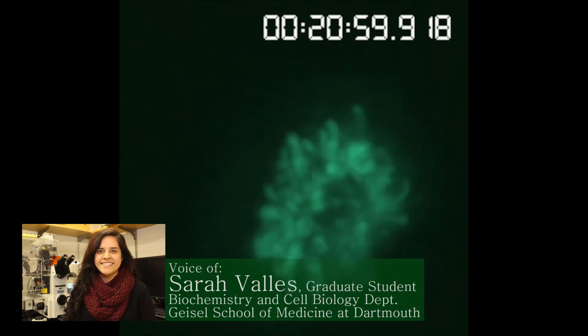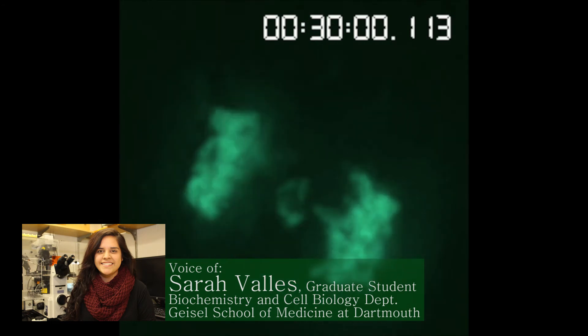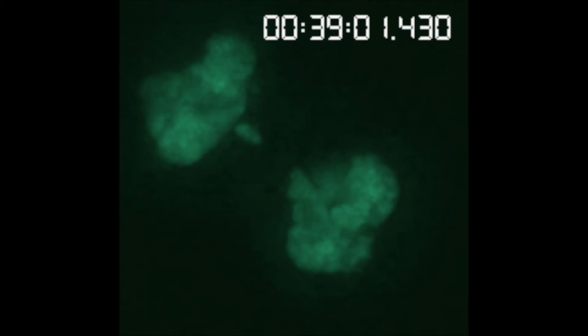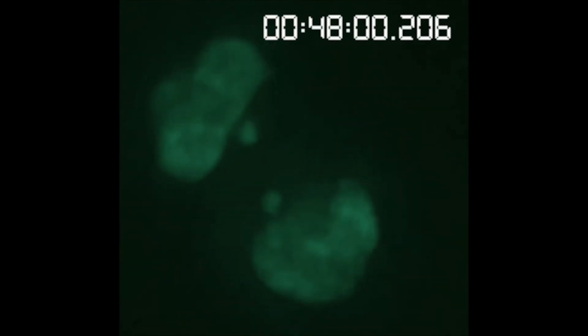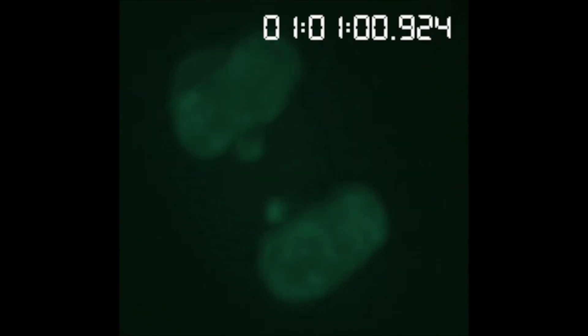Here is another example of a cell dividing with lagging chromosomes. By studying the mechanisms that cells use to properly segregate their chromosomes, we can identify what goes wrong in a cancer cell and determine how it may be corrected. This type of research can lead to the discovery of new treatments for cancer.